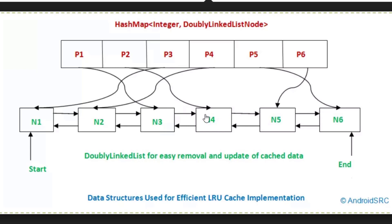Let's say the first item, second, third, fourth, fifth, and sixth item are in the list. Whenever an item is repeated — say n4 comes again — we first check whether it is already present in the linked list. Without a HashMap, we search from the start in O(n). If n4 is found, it is moved to the front of the linked list. The problem with using only a doubly linked list is that searching takes O(n) time — that is why we need the HashMap.